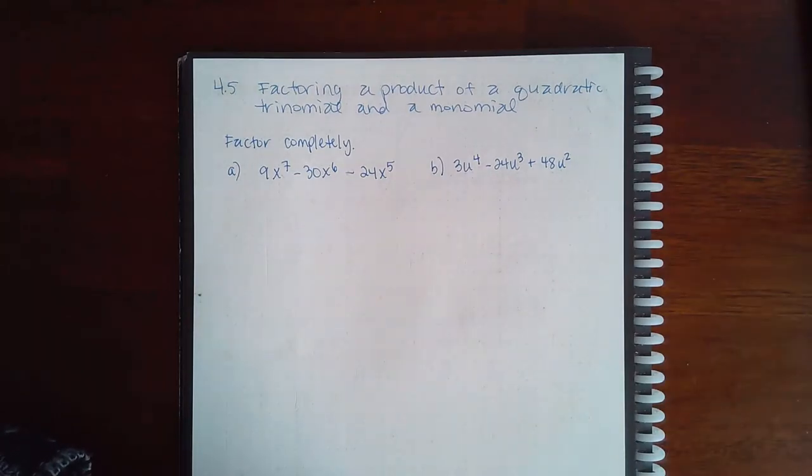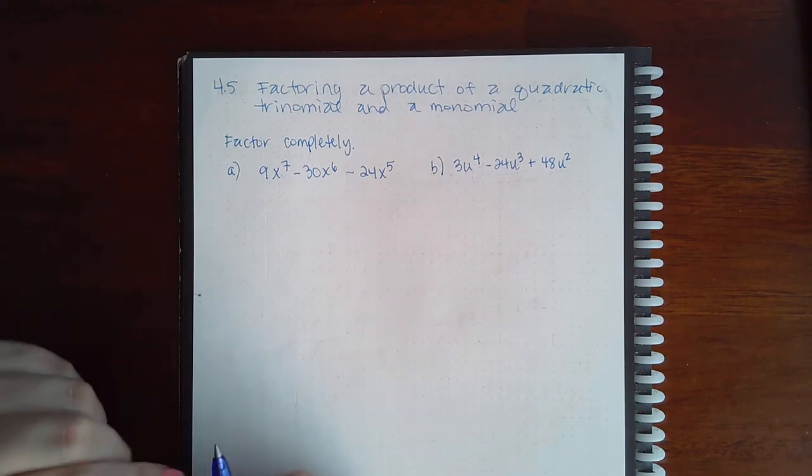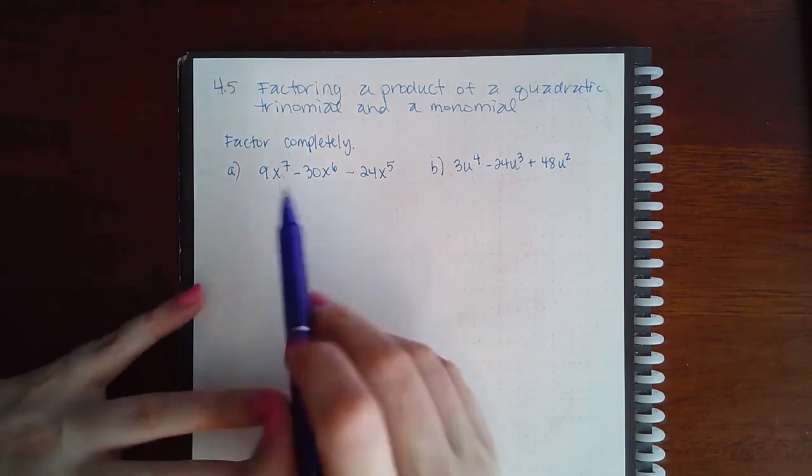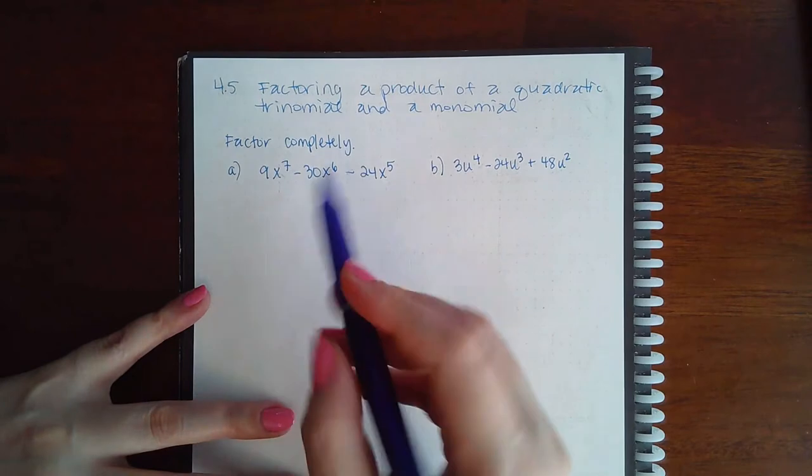Here we have 4.5 factoring a product of a quadratic trinomial and a monomial. The first thing we need to do is factor out GCFs if we can, and in this case every one of these numbers can be divided by three.